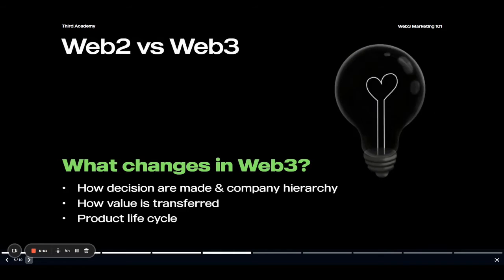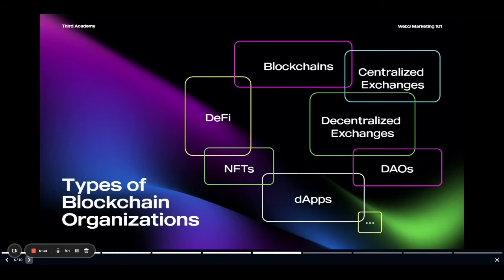Web 3 is new and constantly iterating, but there are several notably new types of organizations that blockchain gave rise to, and they're not all businesses in the strict sense of the word. These include blockchains themselves, decentralized apps, DAOs, DeFi, and NFT projects, and of course exchanges that facilitate the movement of all of this — both centralized and decentralized. Don't worry if that seems like a lot; we'll dive into each of these with examples so you can see what they actually do.